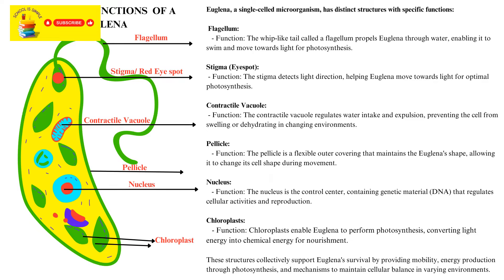Chloroplasts: chloroplasts enable Euglena to perform photosynthesis, converting light energy into chemical energy for nourishment. These structures collectively support Euglena's survival by providing mobility, energy production through photosynthesis, and mechanisms to maintain cellular balance in varying environments.